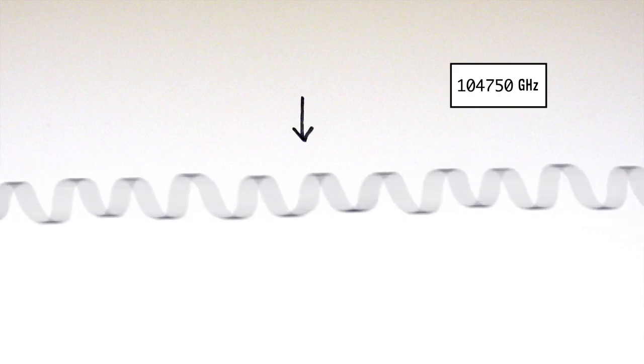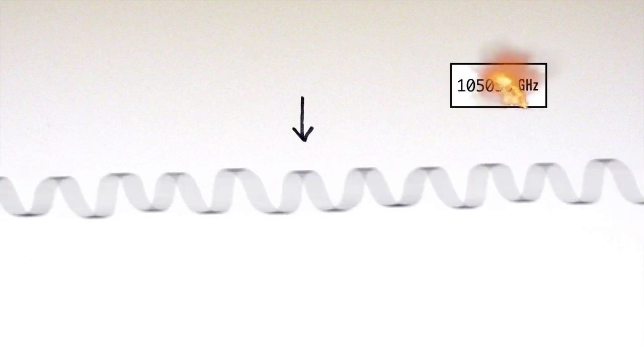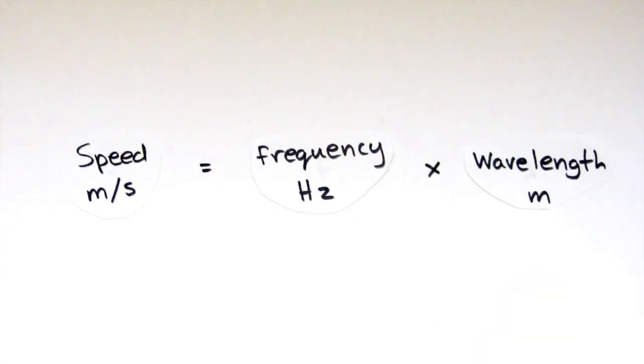The speed of a wave is related to its frequency and wavelength, according to this equation. Where V equals F times lambda. Where V is the wave speed in meters per second, F is the frequency in hertz, and lambda is the wavelength in meters.